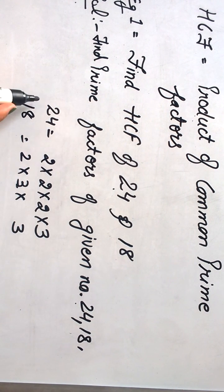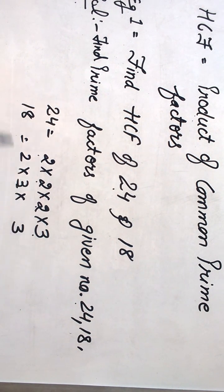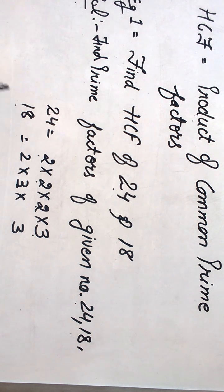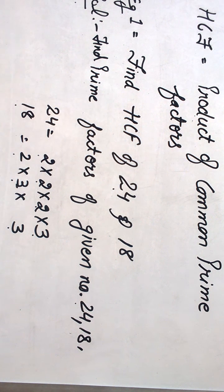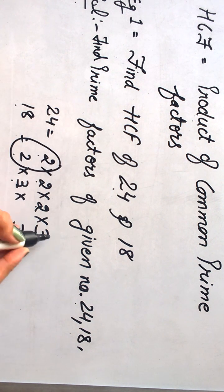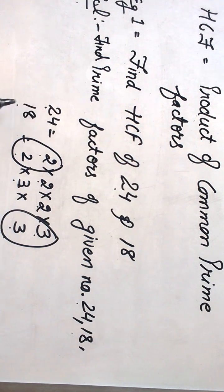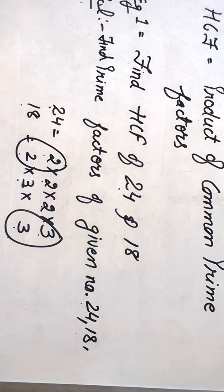The prime factors for 24 are 2 × 2 × 2 × 3, and the prime factors for 18 are 2 × 3 × 3. So here we can see that number 2 and number 3 are the common factors for 24 and 18.